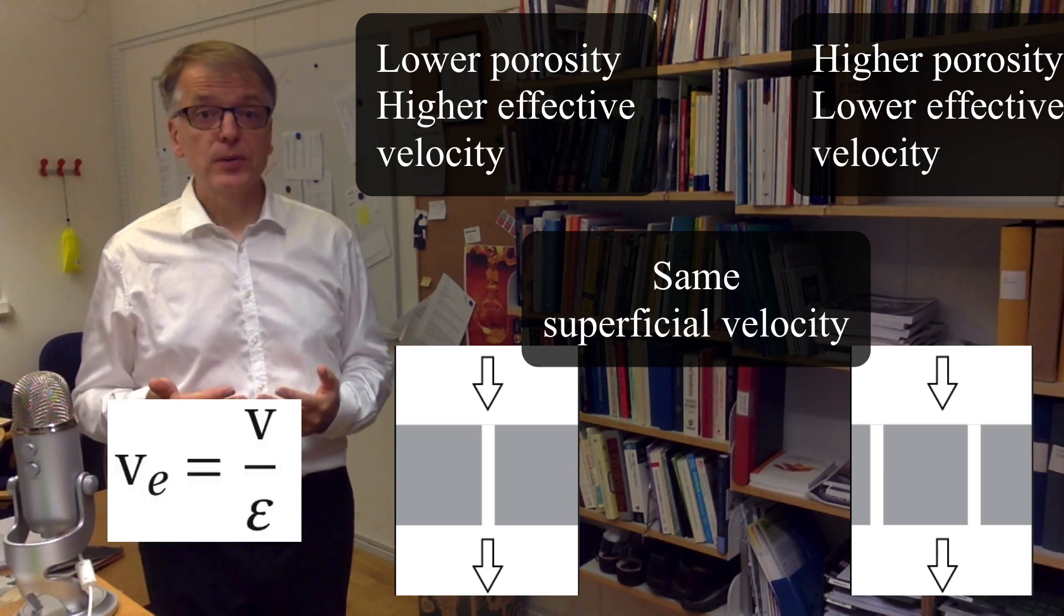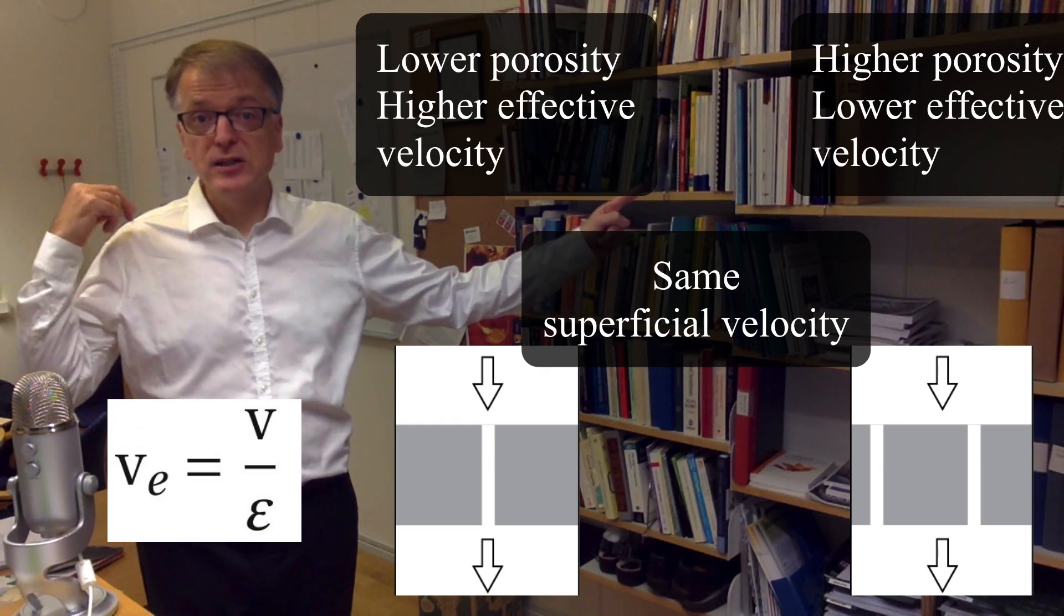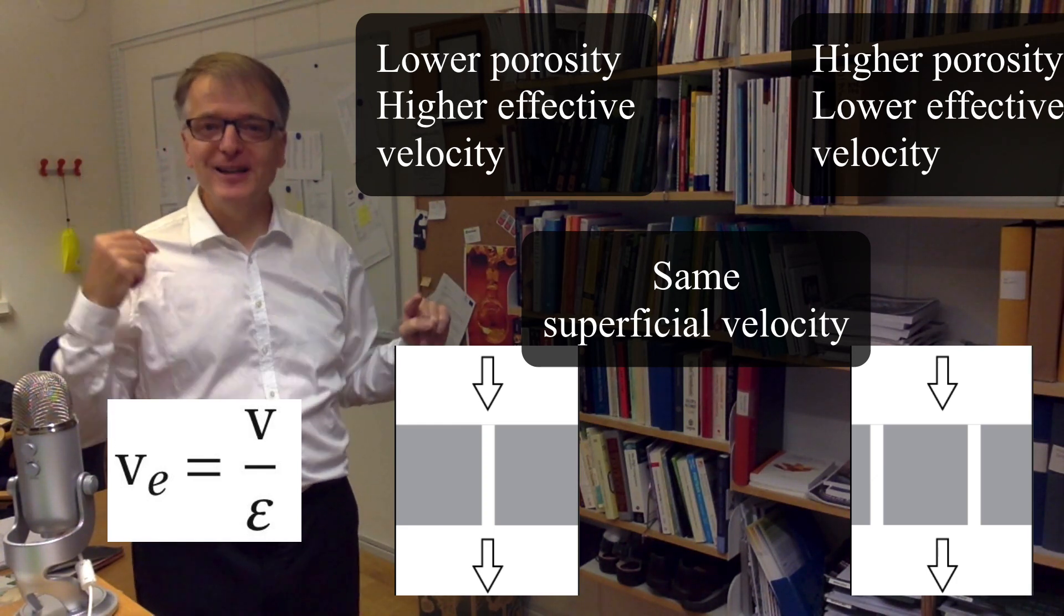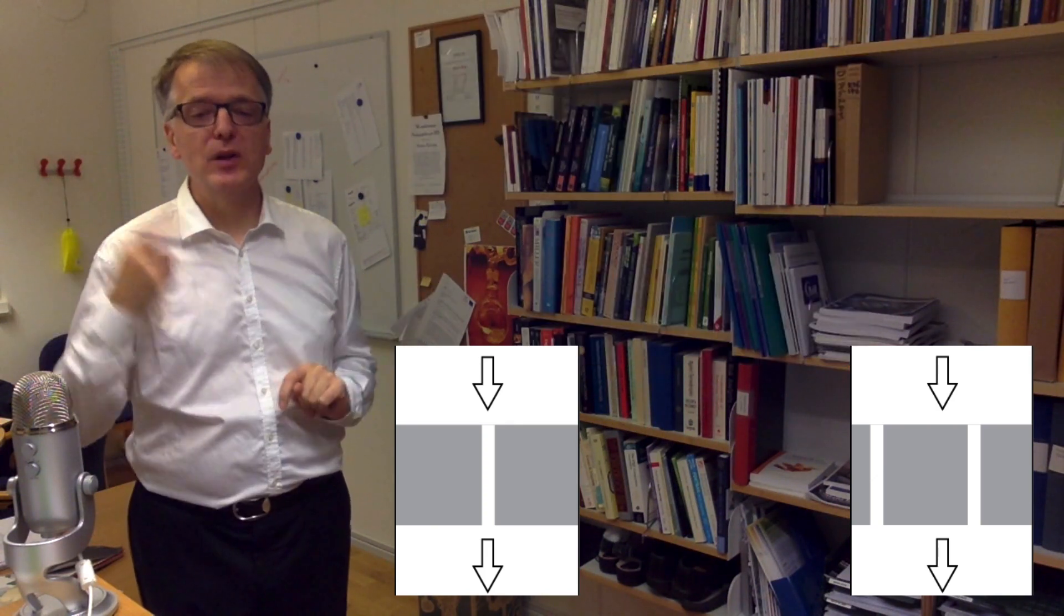So far, the equation seems to hold. Since the porosity in the porous media with two channels is twice as high as the porosity in the porous media with one channel, the effective velocity must be twice as high in the porous media with only one channel.